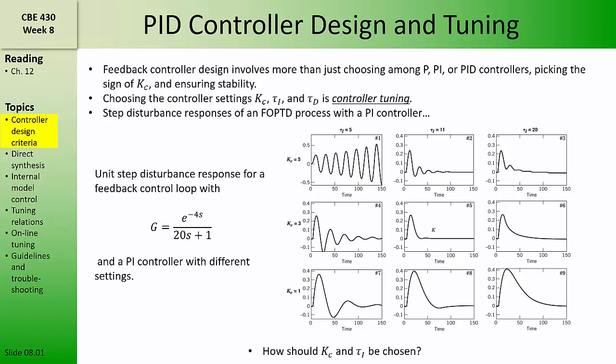In the previous chapter, we developed the servo and regulator transfer functions for a standard feedback control loop, and we saw how we can use these mathematical descriptions to establish stability limits for feedback controllers. Feedback controller design involves more than just choosing among P, PI, and PID controllers, and then choosing the sign of the controller gain to ensure stability. When designing feedback controllers, what we want to do is choose specific values for the gain, the reset time, and the derivative time. We call choosing these values controller tuning, and we can tune feedback controllers based on how we want the feedback control loop to respond to setpoint changes and disturbance inputs.